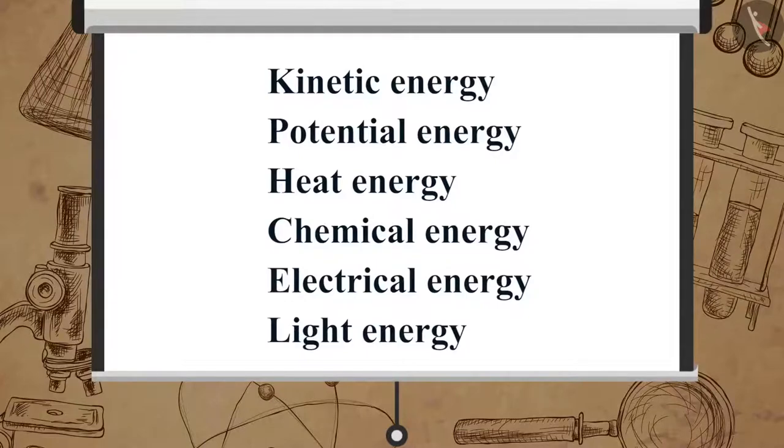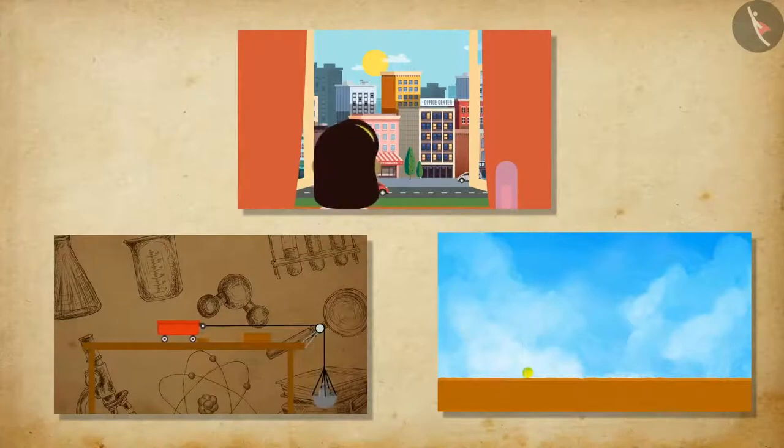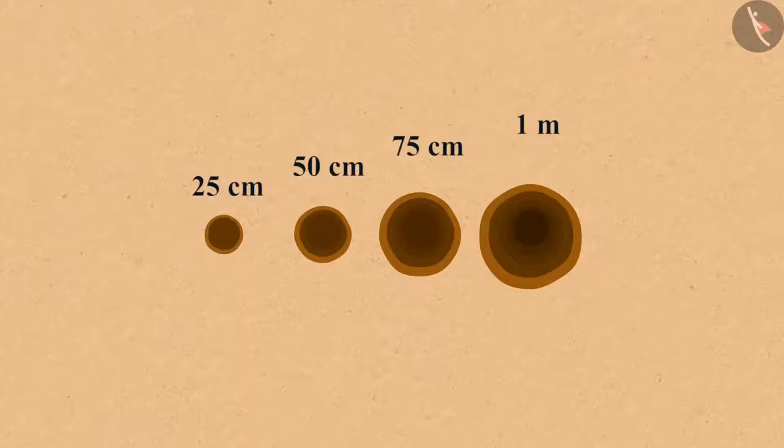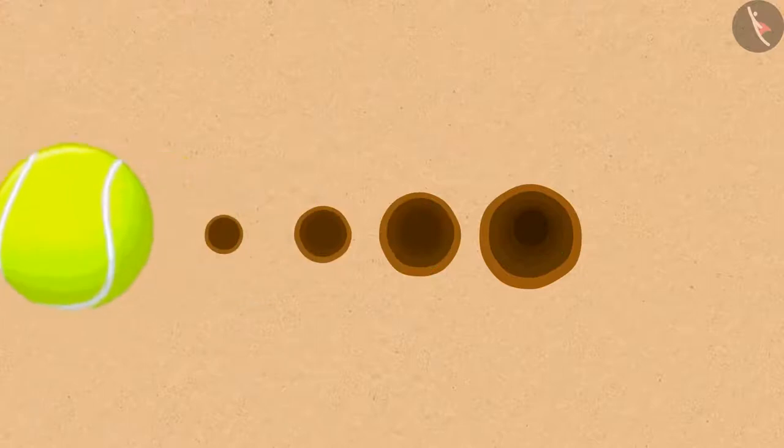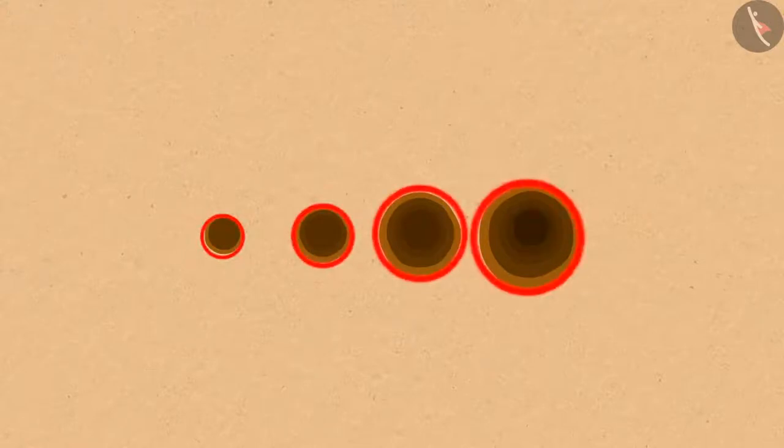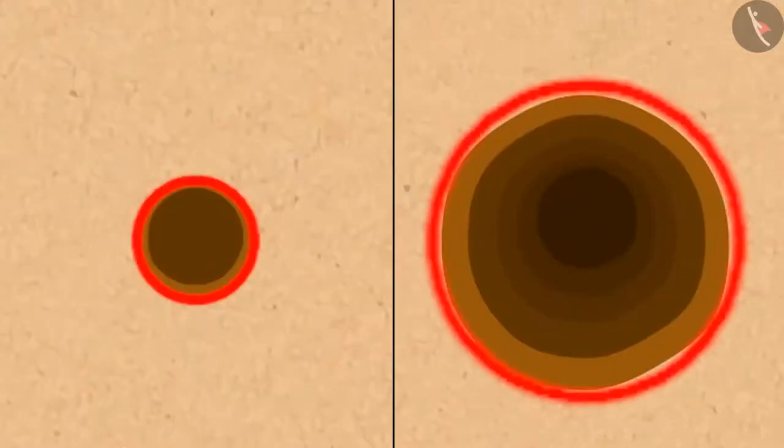Now let's perform a simple experiment to understand kinetic energy. Take a heavy ball and drop it in a bed of dry or wet sand. First drop the ball from a height of 25 centimeters, and then keep on increasing the height from where you drop the ball, like 50 centimeters, then 75 centimeters, then 1 meter, and so on. Don't forget to drop the ball at different positions each time so that you can have a clear view of the depression in the sand. Now observe the depressions and compare their depths. Which depression is the deepest and which is the shallowest? What led the ball to cause a deep or shallow depression in the sand?